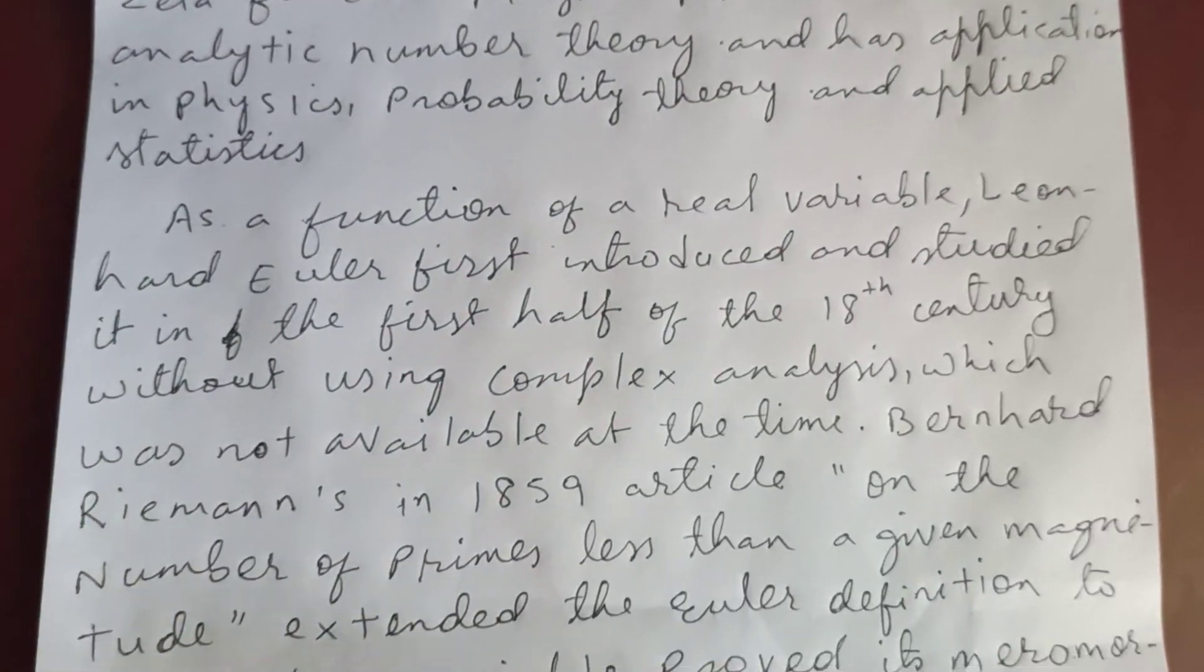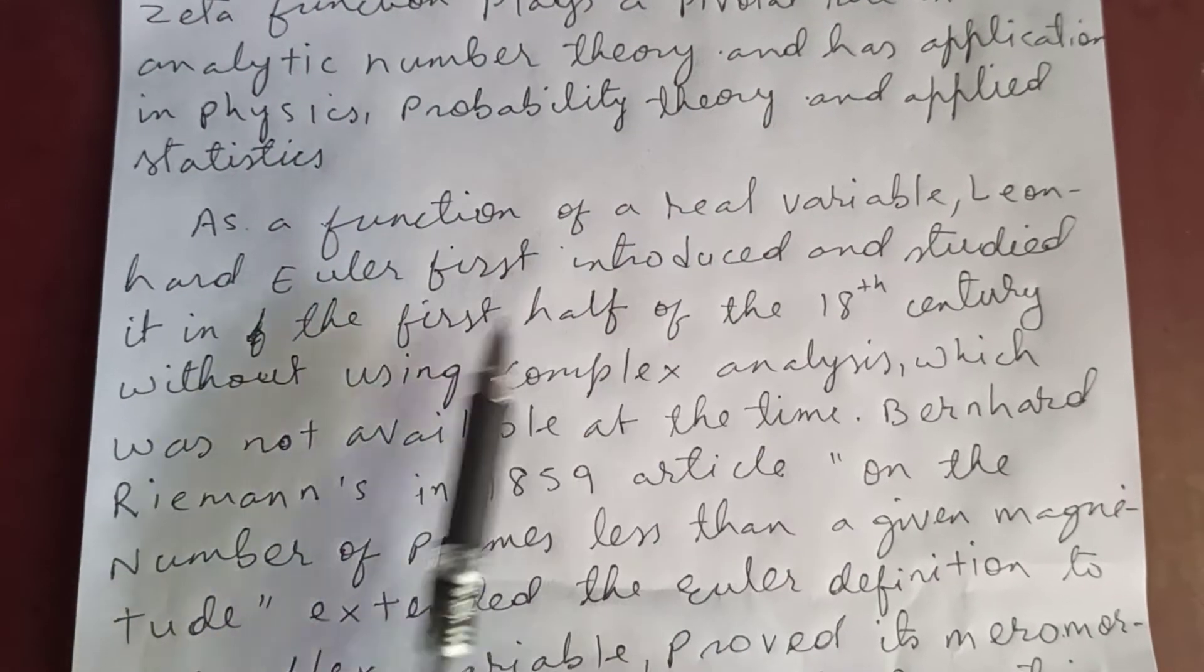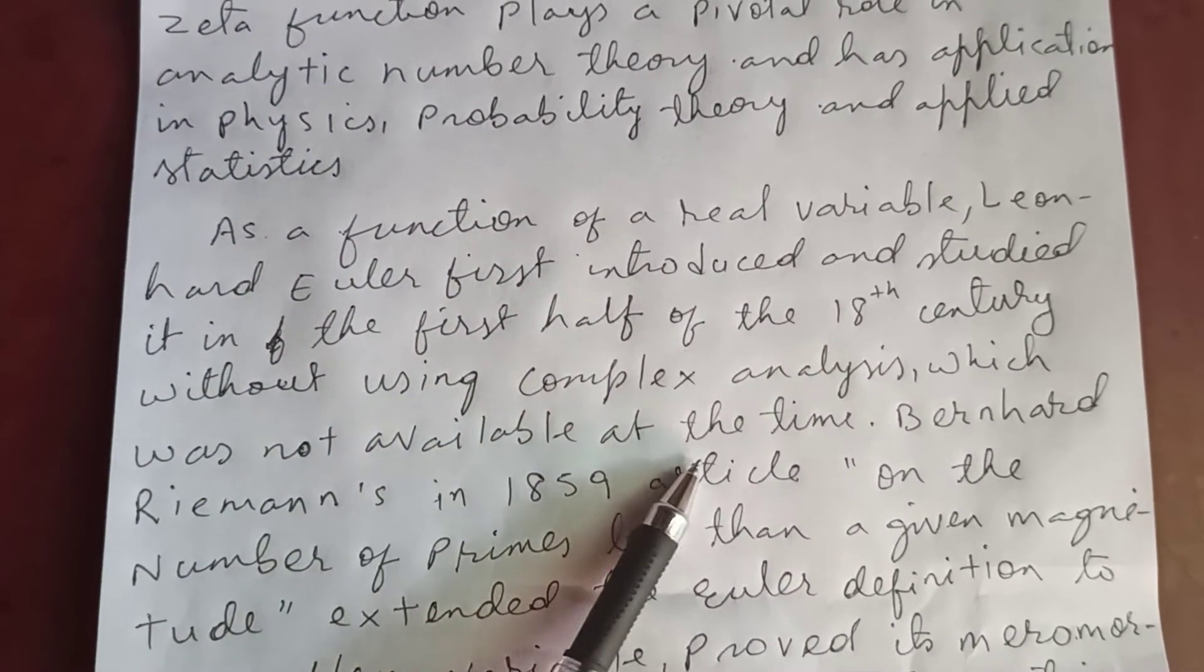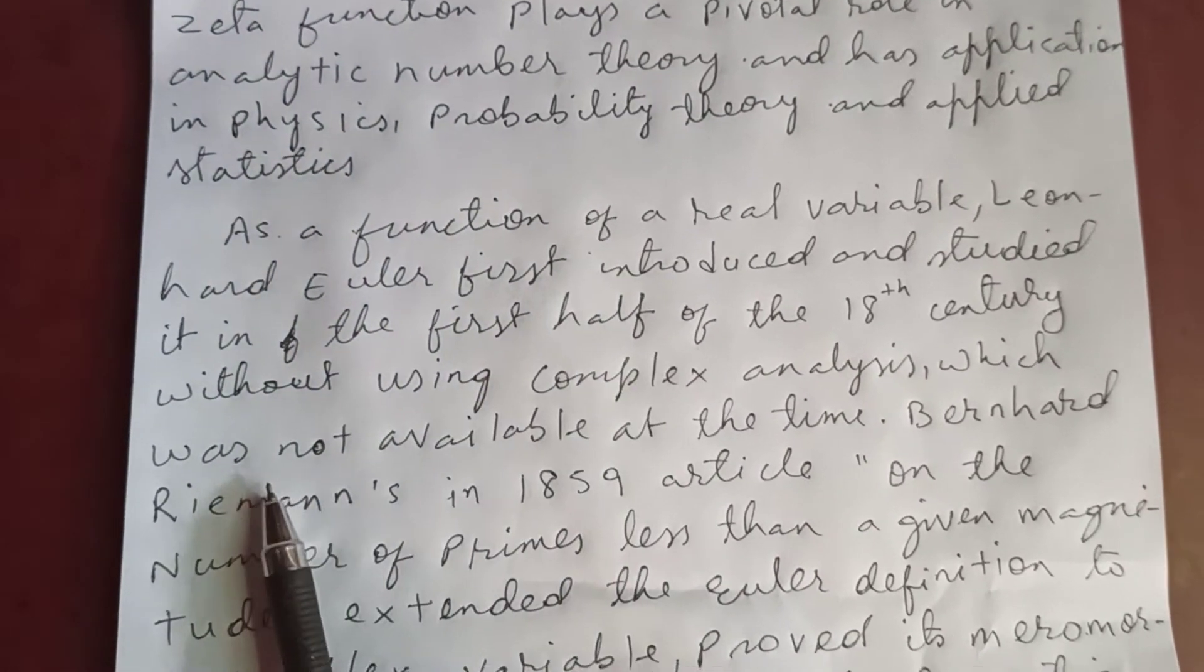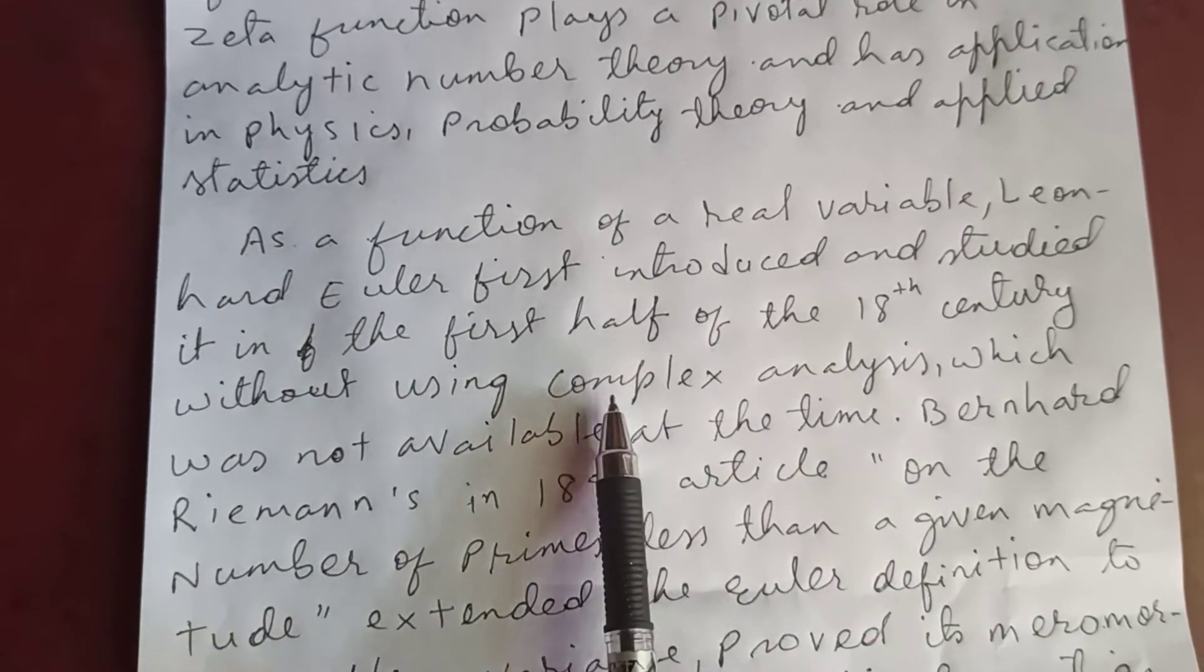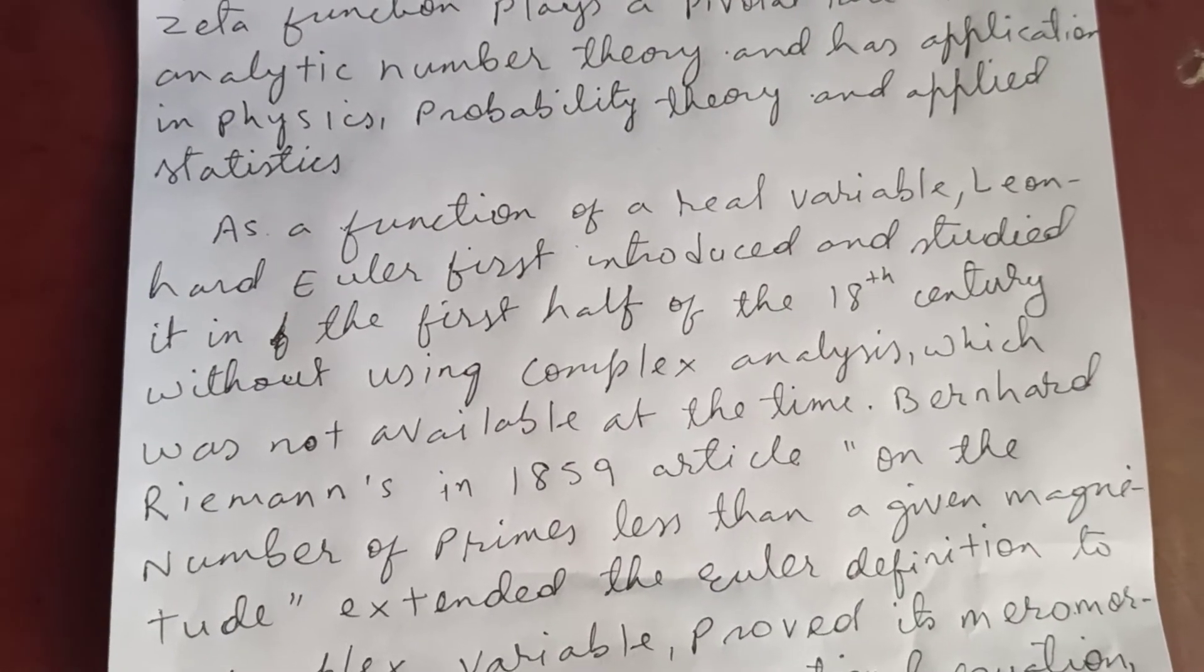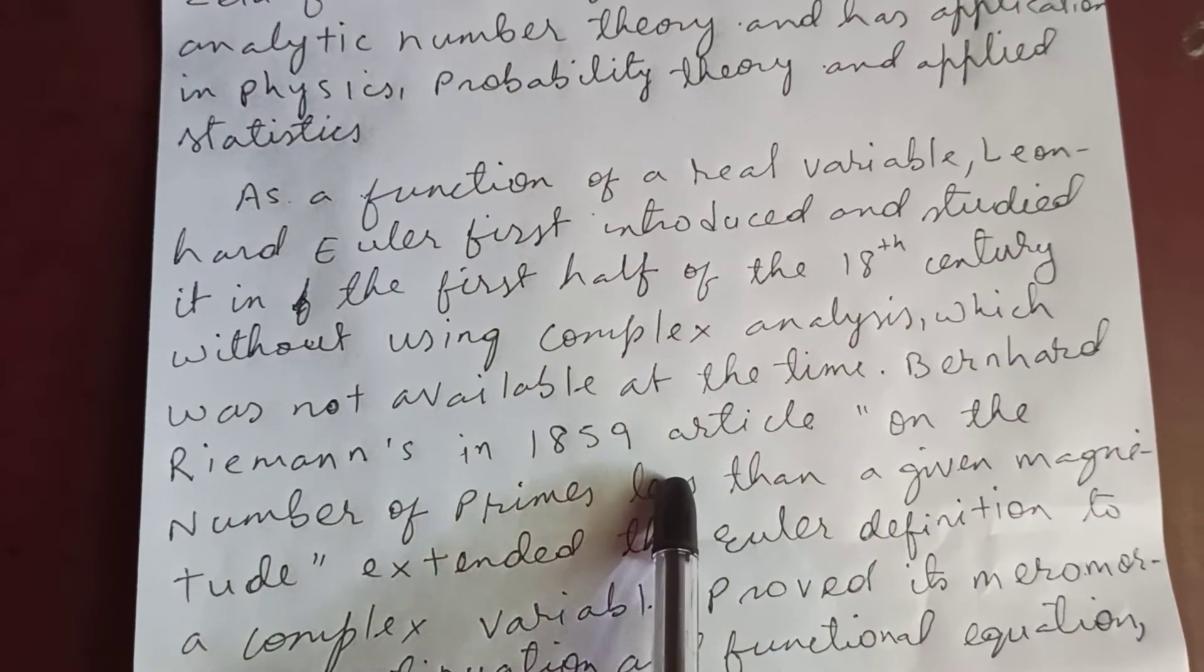As a function of real variables, Euler first introduced and studied it in the first half of the 18th century without using complex analysis, which was not available at the time. At the time of Euler there was no complex analysis.